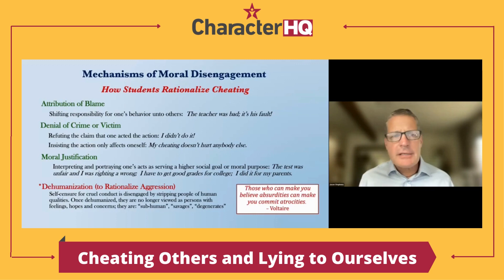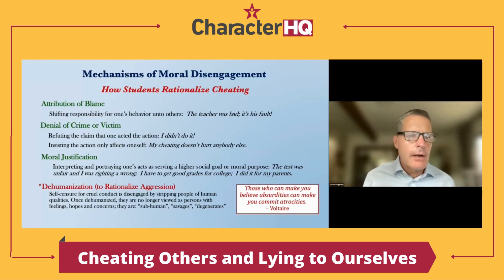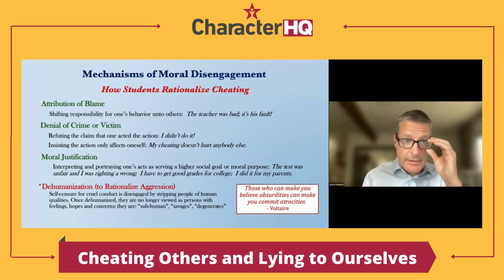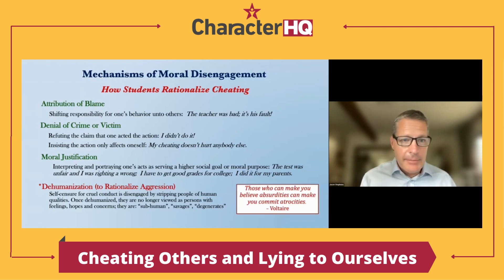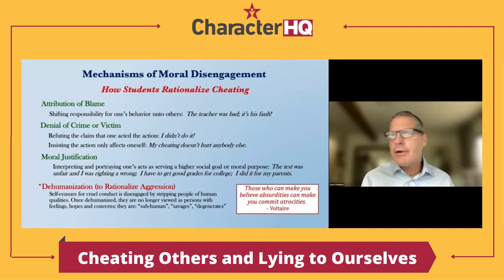Attribution of blame, similar to externalizing, typically sounds like: 'it's the teacher's fault — the teacher was bad.' Then there's extreme denial — the ultimate ego defense mechanism in a Freudian sense — just saying it never happened: 'I didn't do it.' There's also denial of victim: insisting that nobody else gets hurt: 'I'm just hurting myself if I cheat, so no big deal.' And there's moral justification, where we actually invoke a higher social good: 'this test was unfair, so I was just righting a wrong; my future is at stake — I needed good grades for college; if I failed, I'd be letting down my parents. There's a greater good being served through my misconduct.'